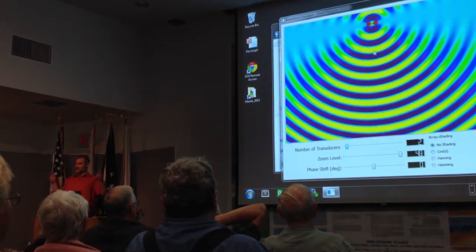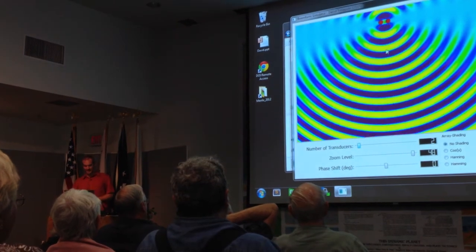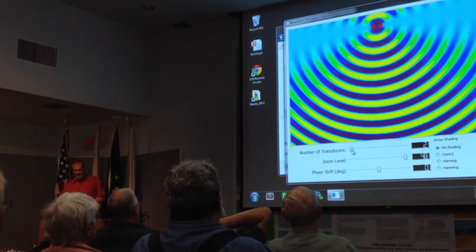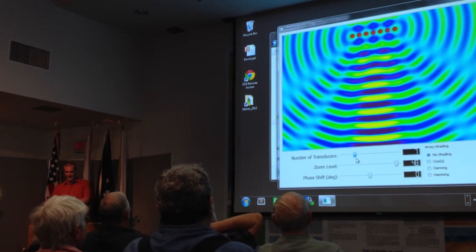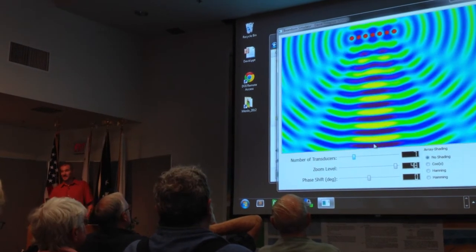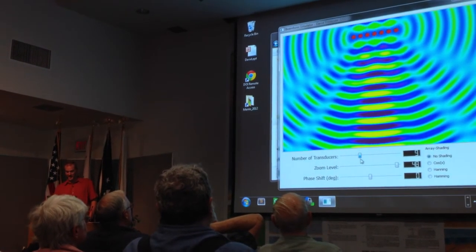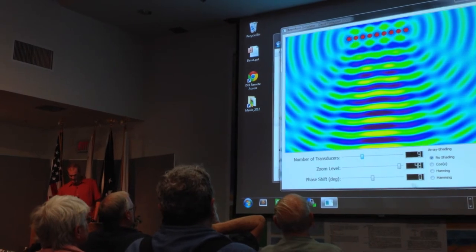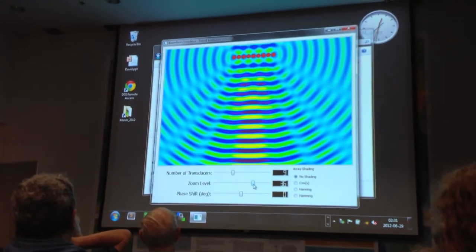So what you've created is a two-speaker array. And the cool thing is, if you keep adding speakers, look at what happens to our beam. It gets narrower and narrower. So now what we've got here is a beam that's nice and narrow, and it's going right where we want it to go.